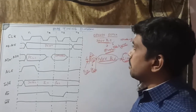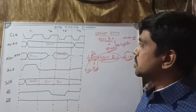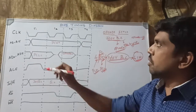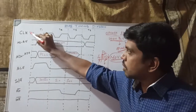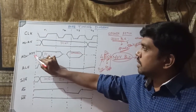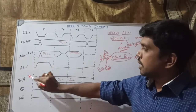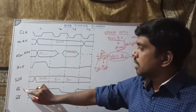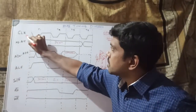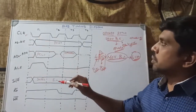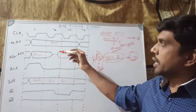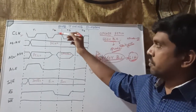Before drawing the timing diagram, you need to know some signals. The signals in the timing diagram are: Clock, A8 to A15, AD0 to AD7, ALE, IO/M bar, RD bar, and WR bar. The clock signal is used to activate internal functions of the microprocessor.